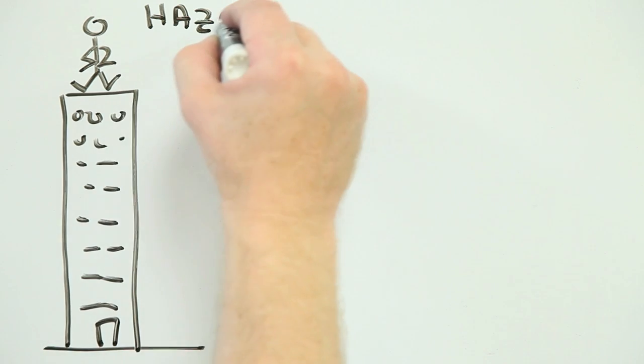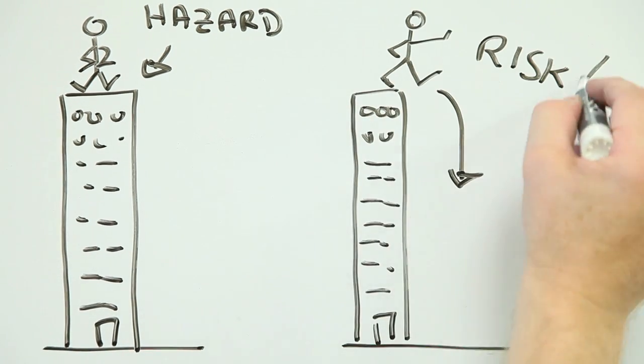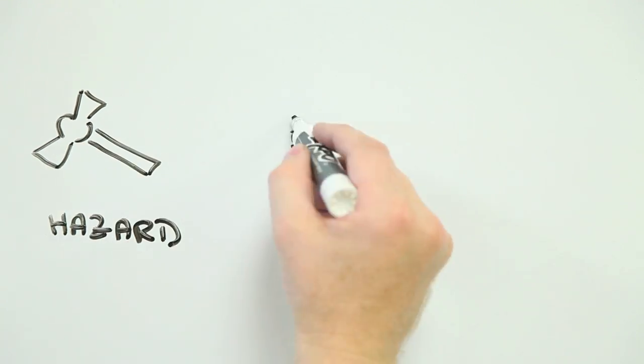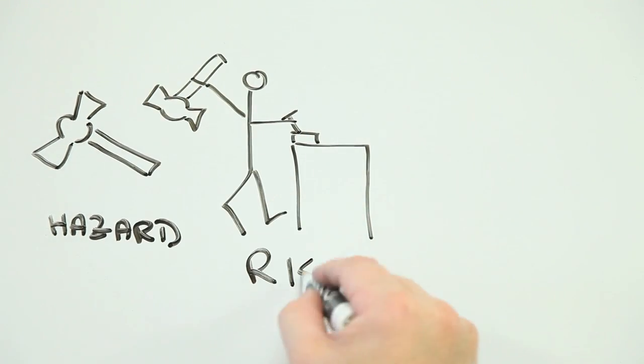Standing on the edge of a tall building is hazardous. Stepping off the edge is a risk. A hammer sitting on a workbench is a hazard. Using it is a risk, especially if you're cack-handed.